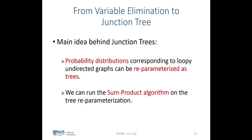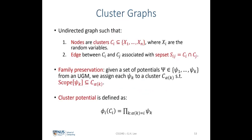The main idea behind the junction tree is that for any given probability distribution corresponding to a loopy undirected graph, we can reparameterize it as a tree which we call the junction tree, and therefore we can run the sum-product algorithm on this tree parameterization to avoid recomputing or rerunning variable elimination on every single query node. Before we define the junction tree, we first define cluster graphs. A cluster graph is an undirected graph such that the nodes or random variables are in the clusters.